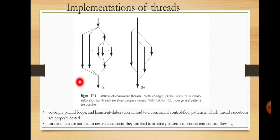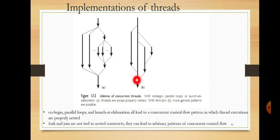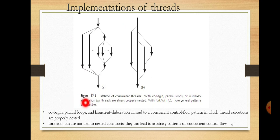In the case of fork and join, there is no such structure — it is arbitrary. When you call fork, you create a thread; when you call join, you join the thread. So there are two implementations: the first follows co-begin, parallel loops, and dovet elaborations with proper nesting, while the second uses fork and join for arbitrary, unstructured thread creation.